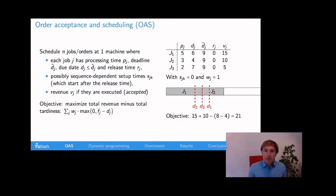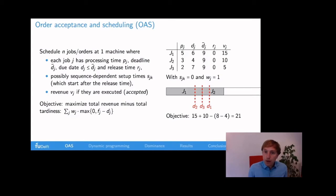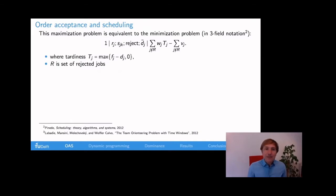For example, here on the right-hand side, we have three jobs with processing times 5, 3, and 2 that all need to be scheduled before time 9. This is not possible, so only two of these jobs can be scheduled. A schedule with first job 1 and then job 2 gives us a value of 21 by having the revenue for job 1 and 2 at 25, but also a penalty because job 2 finishes at time 8 instead of 4, which is the due date for this job. This maximization problem is actually equivalent to the minimization problem for a single machine with release times, sequence-dependent setup times, the possible rejection of jobs, and the deadline, where we minimize the tardiness of the selected jobs minus the revenue of the selected jobs.